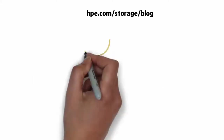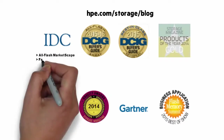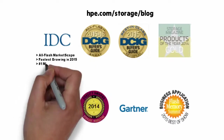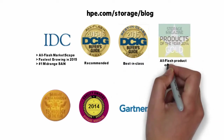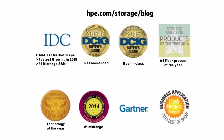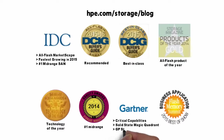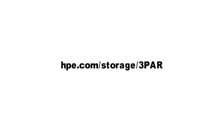At the outset I mentioned the momentum that 3PAR has in the industry. You see a lot here on the screen, but let me call out a few things. 3PAR All-Flash is the leader in IDC's latest All-Flash MarketScape and was the fastest growing All-Flash in 2015. DCIG rated the All-Flash 3PAR as recommended and the mid-range 3PAR as best in class. Storage Magazine named 3PAR their All-Flash Product of the Year. You can learn more about HPE 3PAR StoreServ at hpe.com/storage/3PAR.